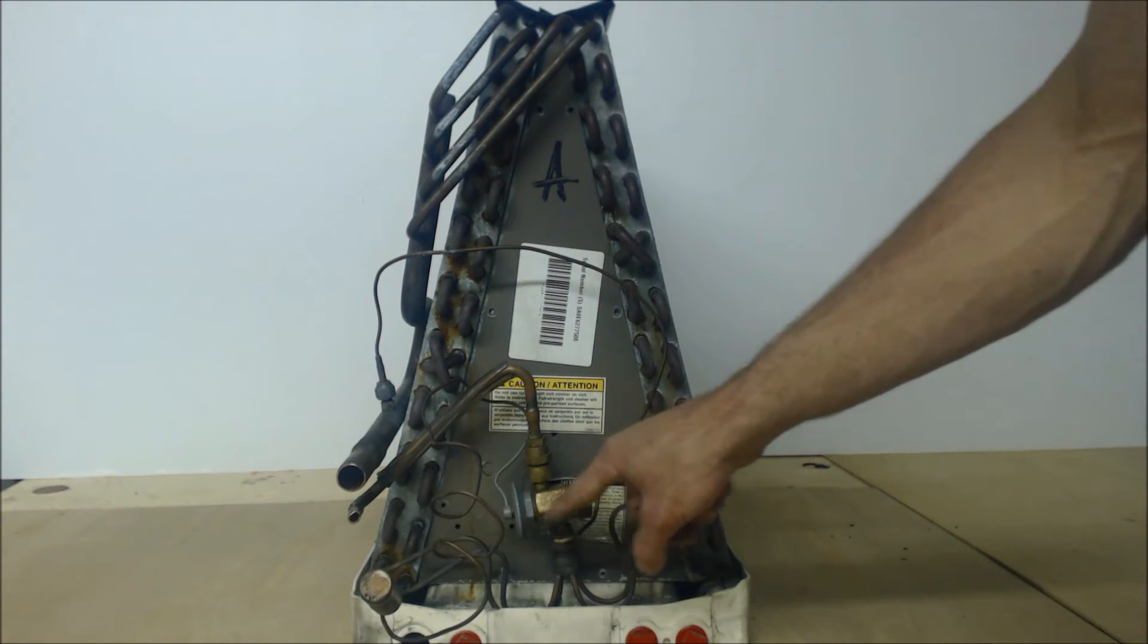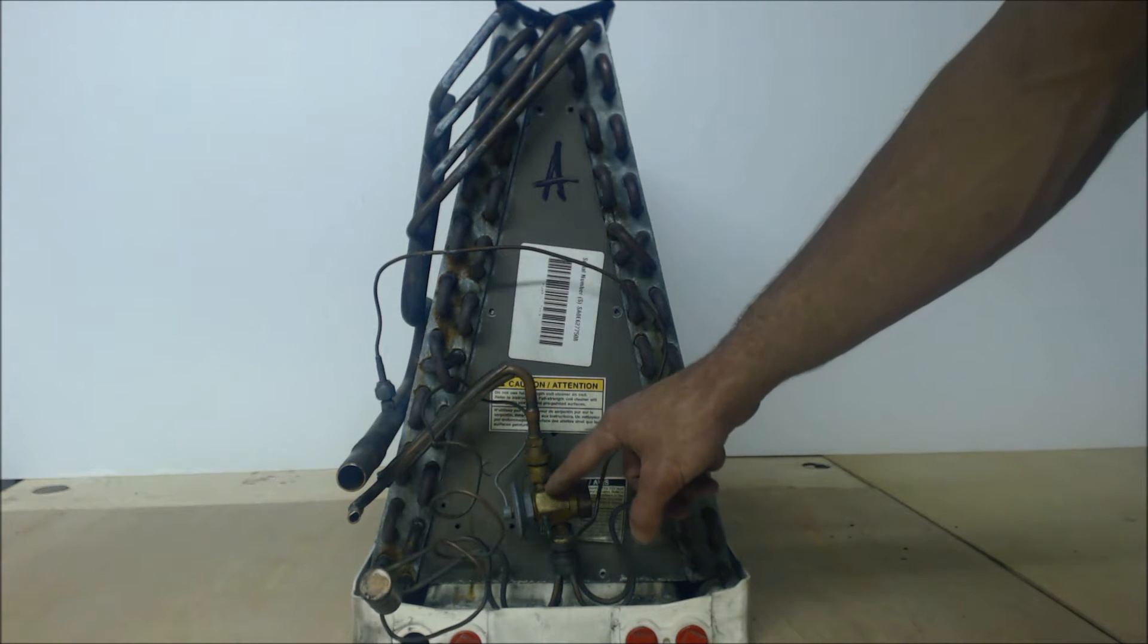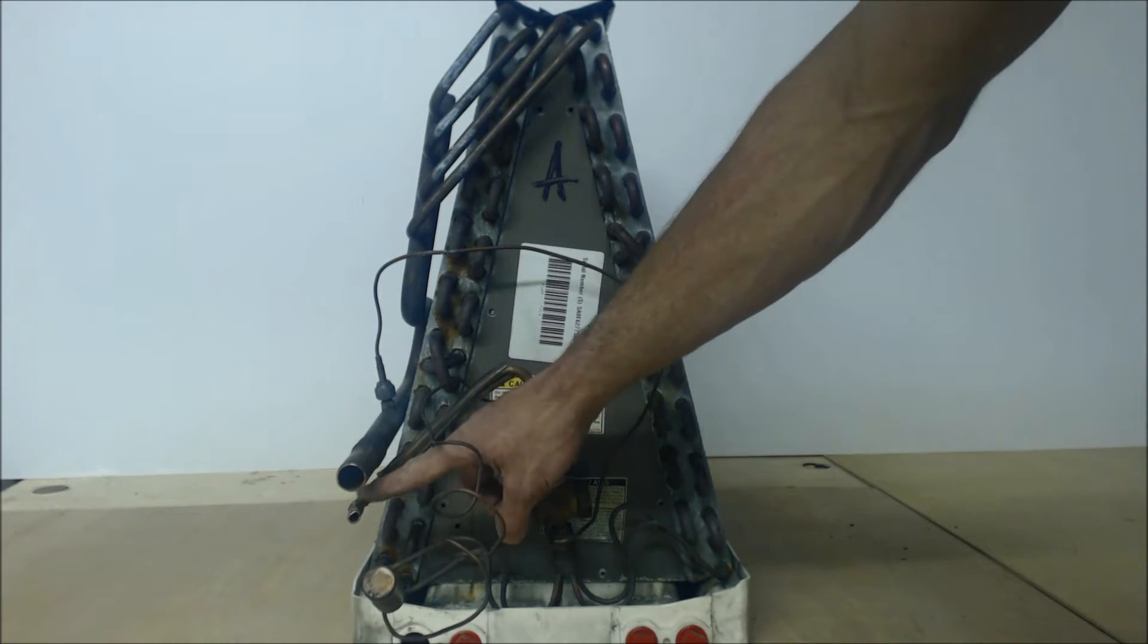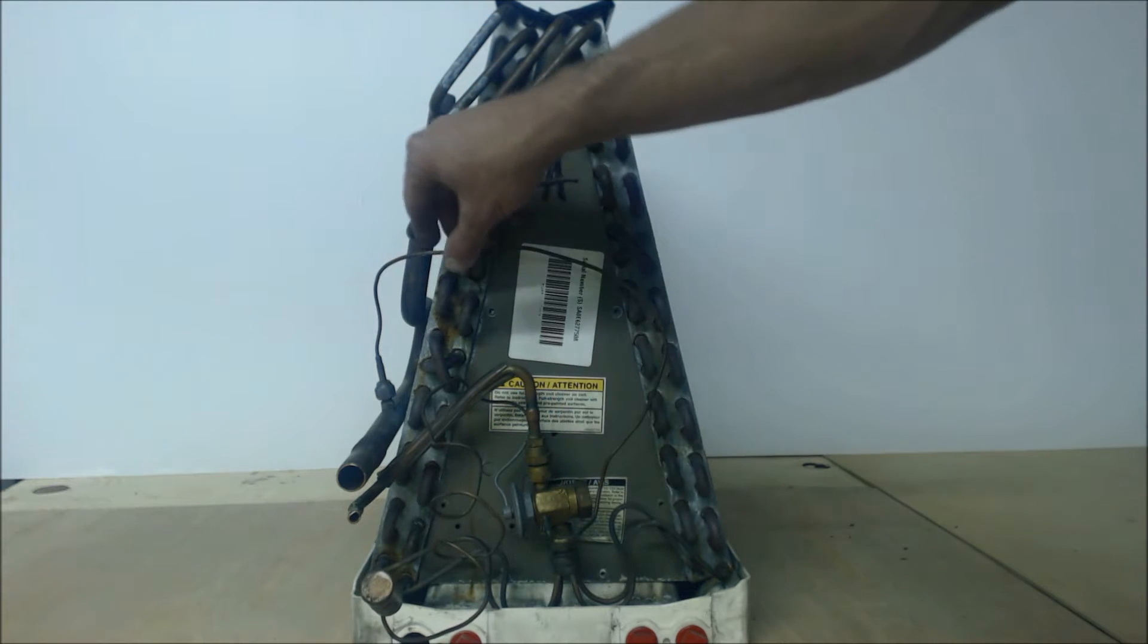You have several pressures coming into play here. You have the pressure coming in as liquid. Then you have this external equalization port, which is actually measuring the pressure on the suction line after the refrigerant goes through the evaporator coil.